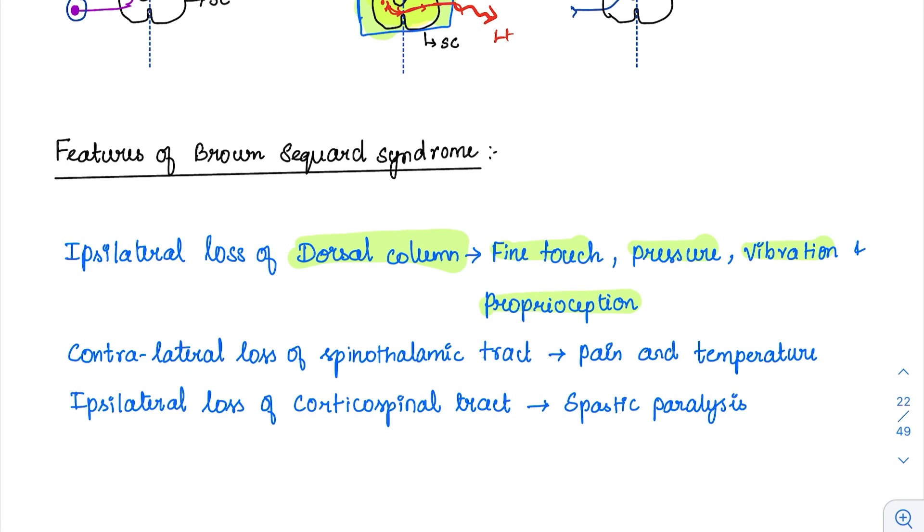Contralateral loss of spinothalamic tract. Contralateral loss of spinothalamic tract which includes the pain and temperature. Just remember there is contralateral loss of pain and temperature. Because in options, they always give one option which is ipsilateral loss of pain and temperature or contralateral for the other two tracts.